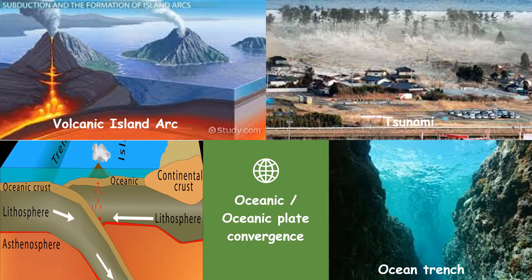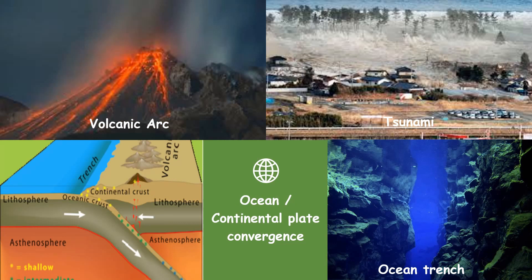When two oceanic plates converge, they produce a group of islands known as a volcanic island arc, and may also trigger a tsunami and create an ocean trench. The ocean trench is located at the subduction zone where the plate subducts. For oceanic-to-continental plate convergence, it produces a group of volcanoes, may trigger a tsunami, and creates an ocean trench at the subduction zone.